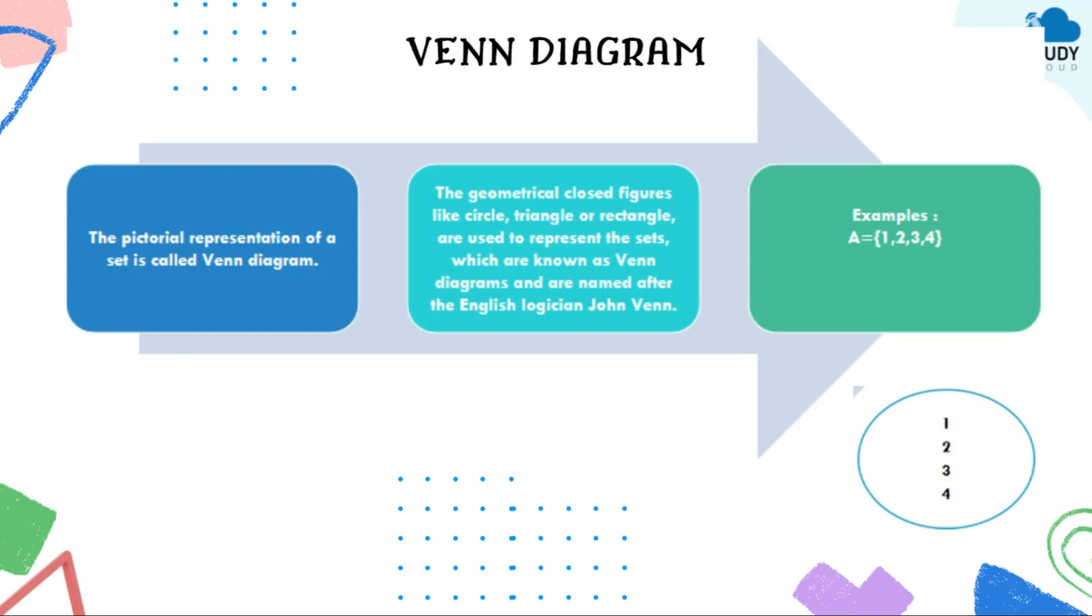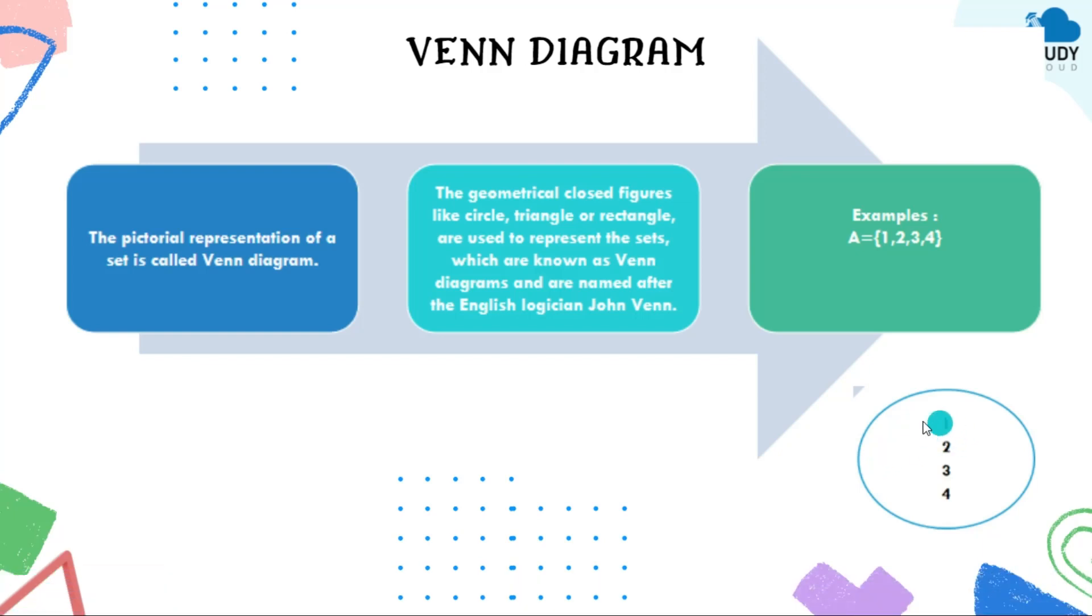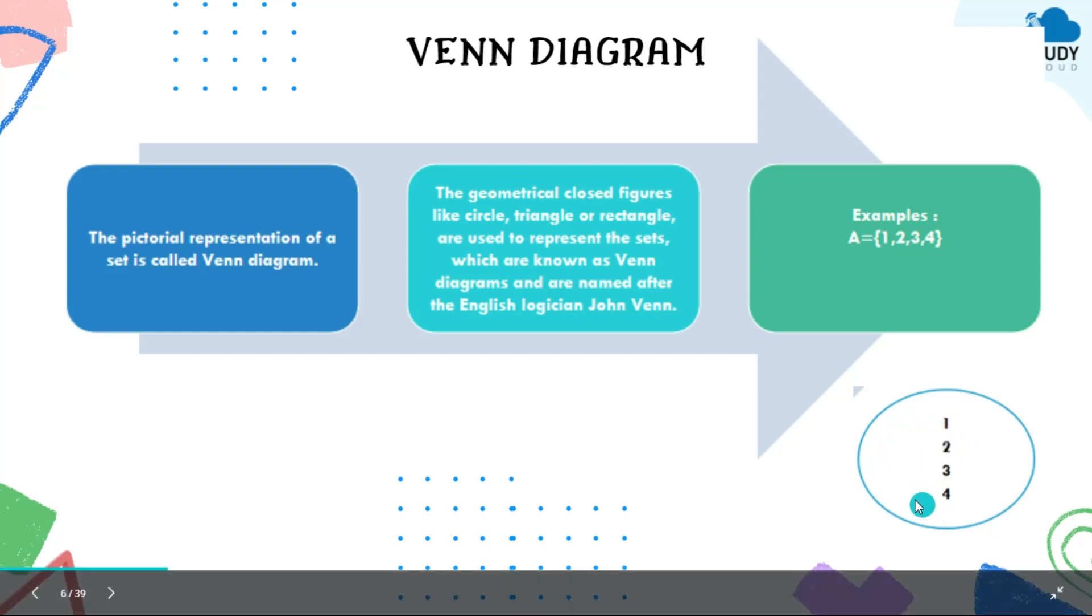Who introduced this theory of Venn diagram? It was started by the English logician John Venn, so according to his name, we use the name as Venn diagram. For example, if set A consists of numbers like 1, 2, 3, 4, just draw one circle, write here A, and write all the numbers as 1, 2, 3, 4. It is simple.